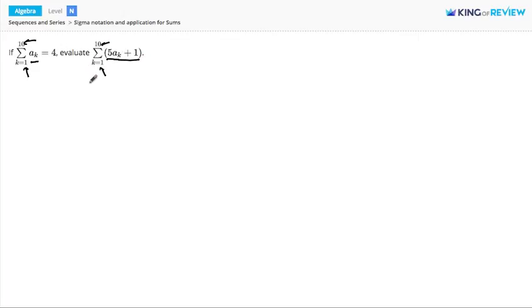Alright, well let's take a look at this second series here that we're trying to find. This series always has 5 times ak plus 1. k starts at 1, so I'm going to plug in 1 for k. The next term will be the same thing, but k will be 2. The next term will be the same thing, but k will be 3, and all the way up to the final term where k is 10.